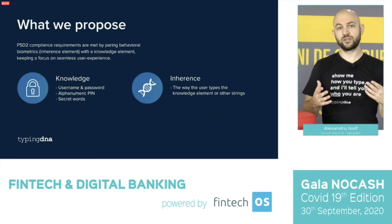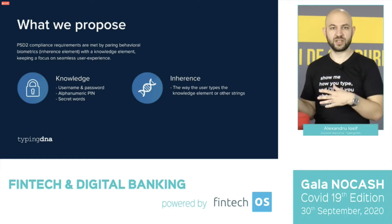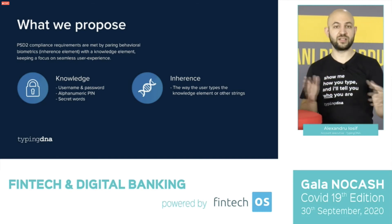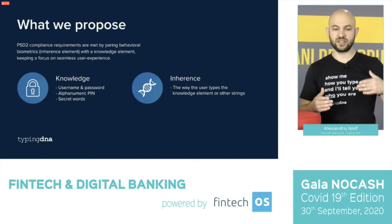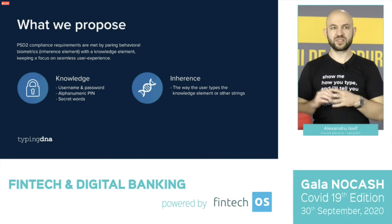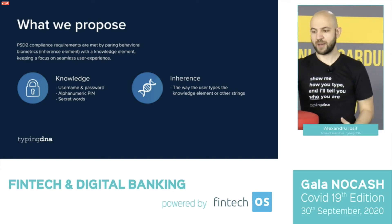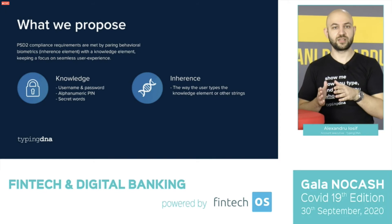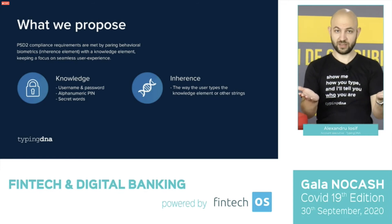What we propose — and the easiest solution, which we believe will take over most of the authentication space — is tying a knowledge element to an inherence element. People have generally run away from the knowledge element, but now we are seeing, at least in the US and Western Europe, a return of the knowledge element paired with behavioral biometrics. You run typing biometrics on a username and password, a PIN, or some secret words only the user knows. From the user's perspective there's only one authentication stage, but from your perspective you have both the knowledge element and the inherence element at the same time.